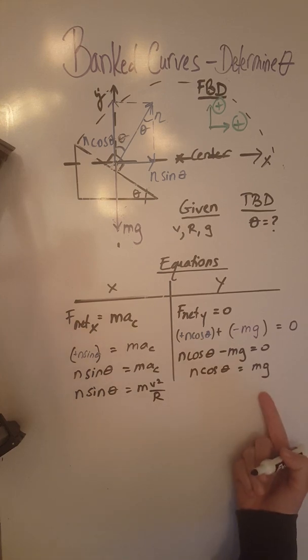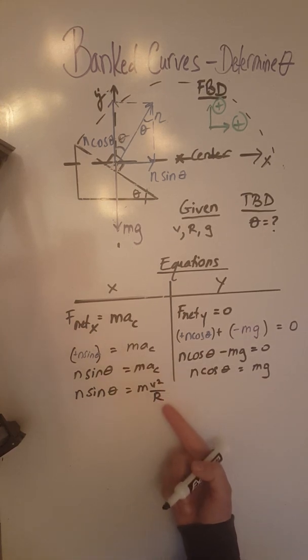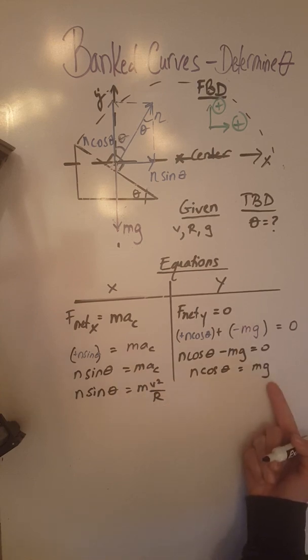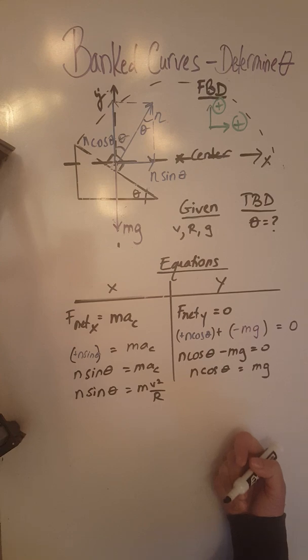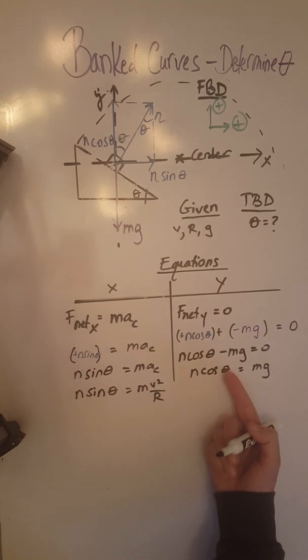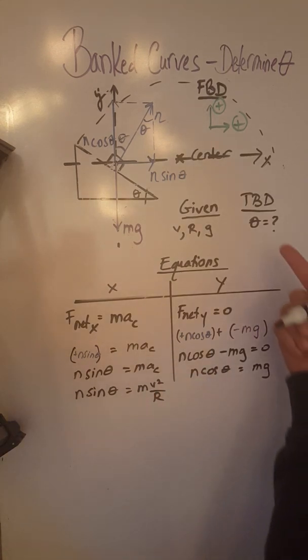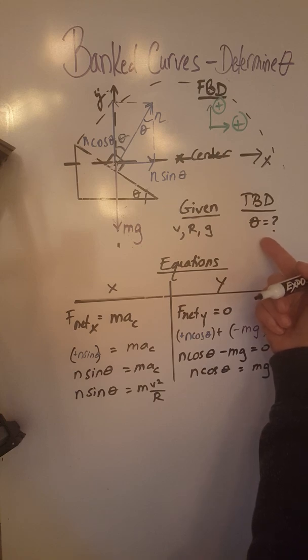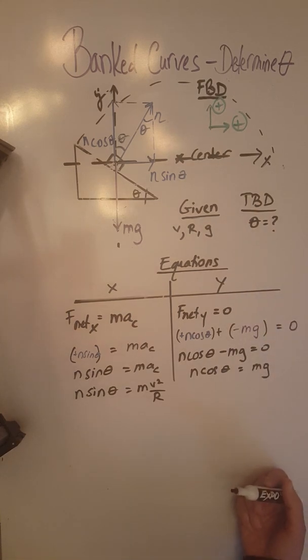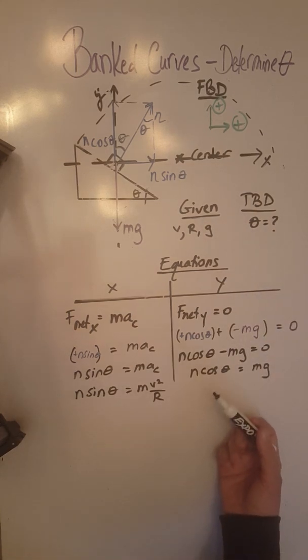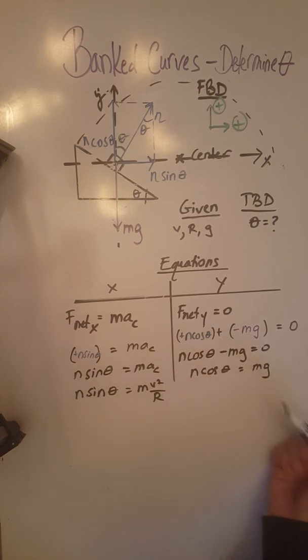So now we have these two equations in which we know v, we know r, and we know g. We do not know m, we do not know n, and we do not know theta. We need to calculate theta. So we would like to actually cancel out, eliminate n and m to be able to only focus on theta.